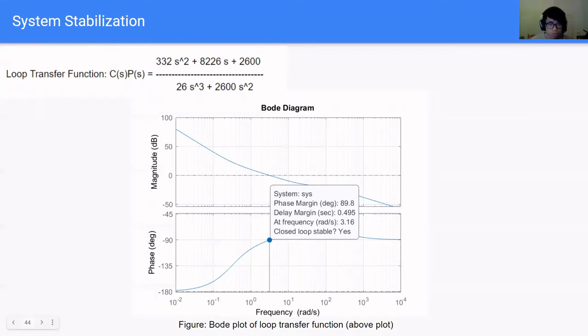For transfer function, we have designed our controller to have black skin at low frequency where we expect to see most of the disturbance. At our crossover frequency at 3.16 radians per second, we have a comfortable phase margin of 89.8 degrees according to Bode diagram. This results in a delay margin of about 0.5 seconds.